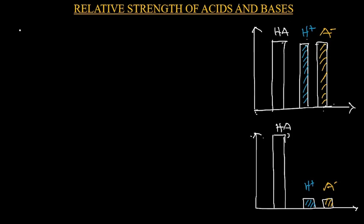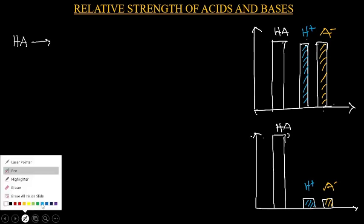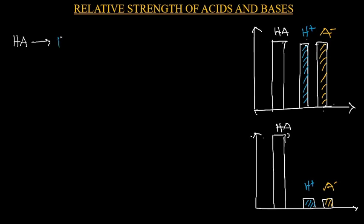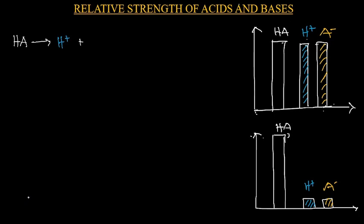The strength of an acid depends on its ability to transfer a proton to a base to form a conjugate base. So when we have an acid HA dissociating in aqueous solution to form H⁺ and A⁻, the acid is HA releasing H⁺ and the conjugate base is A⁻.